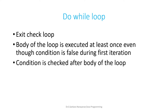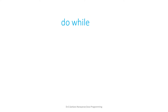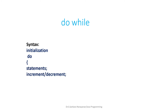It is recommended to use a do-while statement if you want the body of the loop to execute at least once. The condition is checked after the body of the loop. The syntax for do-while: first we have initialization, then the 'do' keyword, followed by the body of the loop containing whatever statements you want to include, followed by the increment or decrement statement.